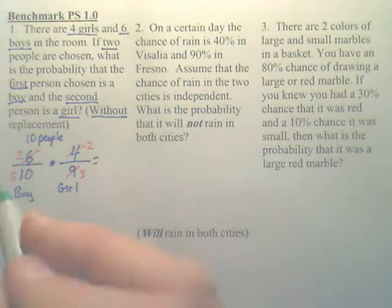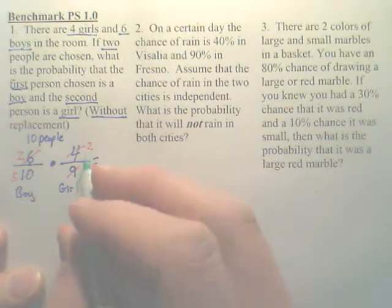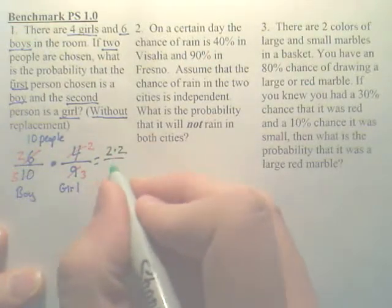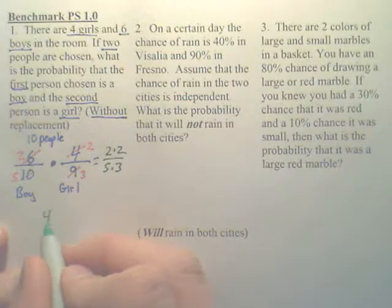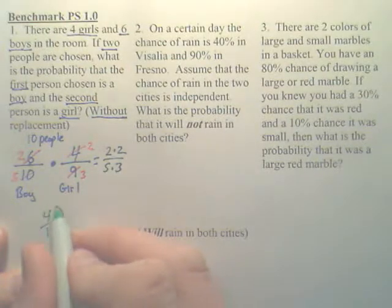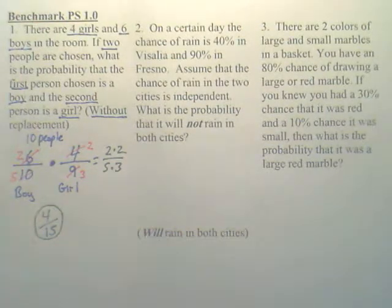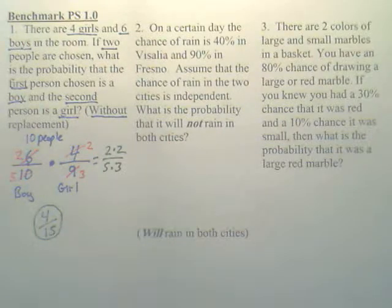So my answer looks like it's going to be two times two over five times three, which is four fifteenths. You have a four and fifteen chance of getting a boy and then a girl in this particular problem.